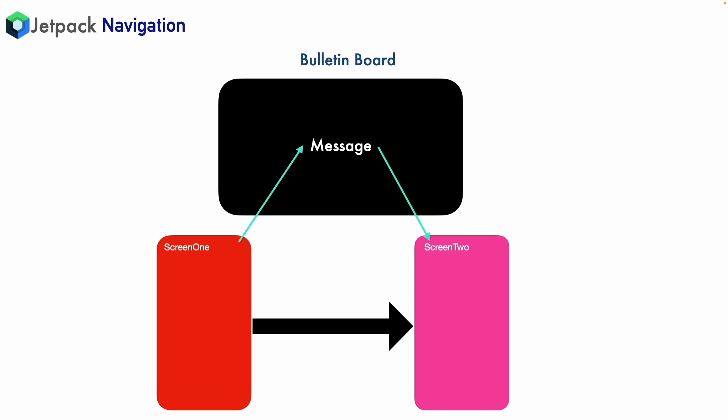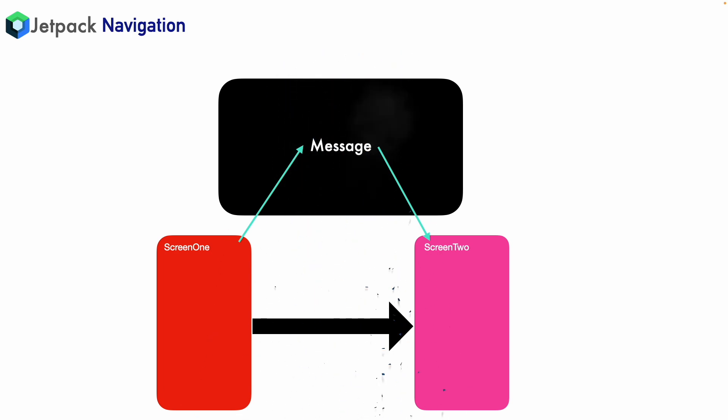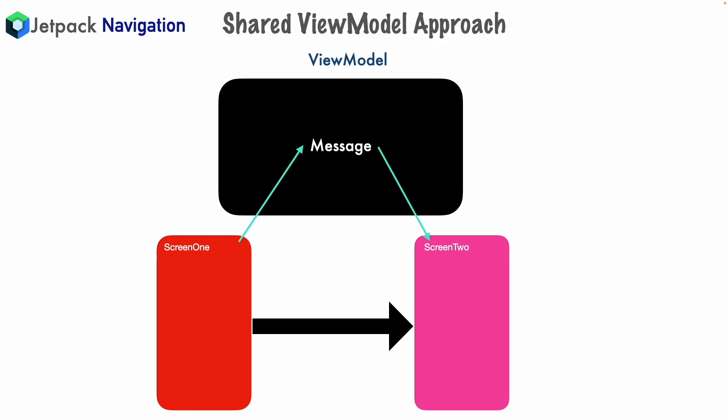The bulletin board is not really a bulletin board — it is actually a ViewModel. And because this ViewModel is shared between Screen 1 and Screen 2, the approach is basically called the shared ViewModel approach to pass data between two screens when navigation happens. Enough of theory — let's try to understand how this is actually implemented.